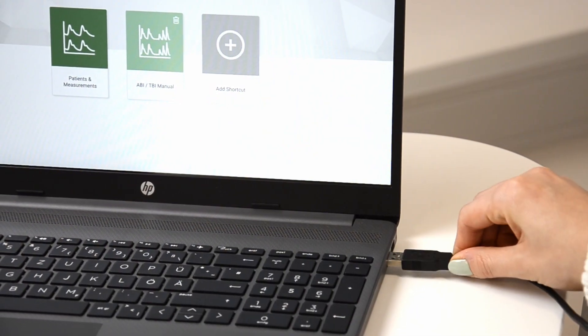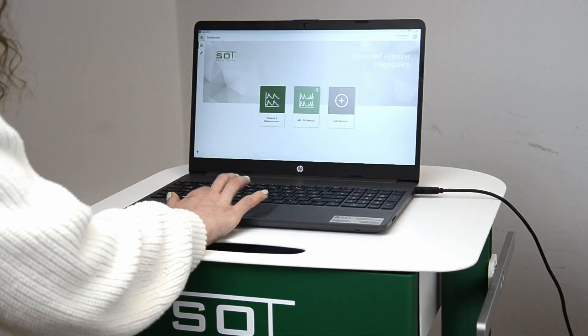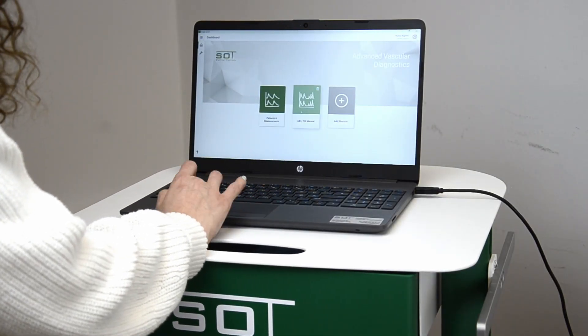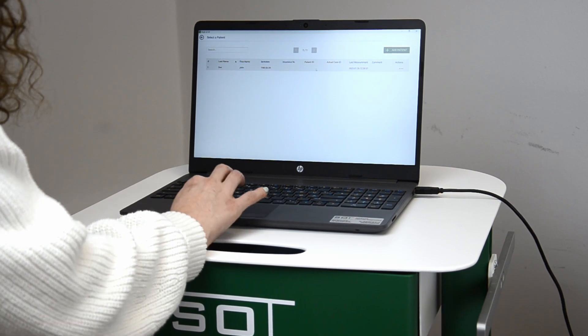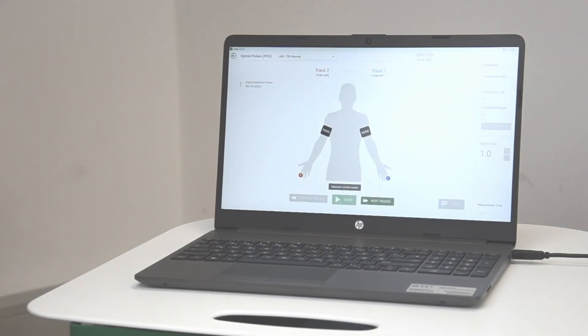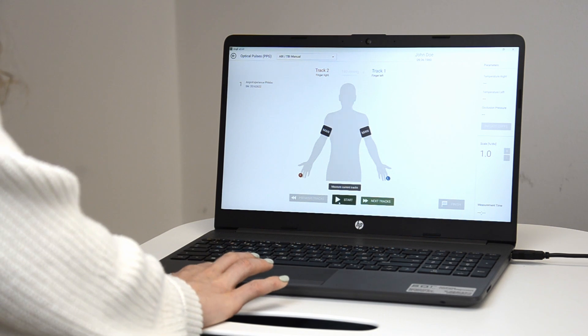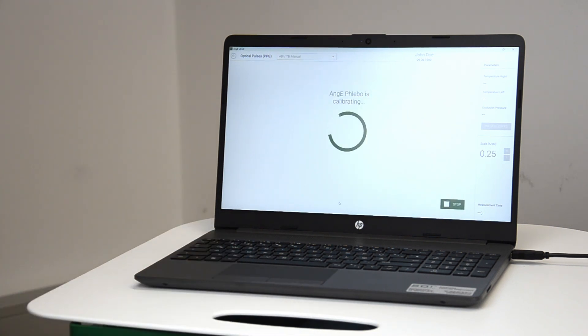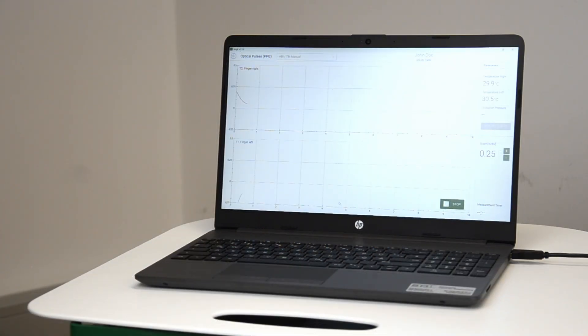Connect the USB cable to the computer. Select the patient or create a new patient in the software and select new measurement. Follow the on-screen guidance. Start the measurement and wait a few seconds for the optical sensors to calibrate. Make sure that you see good quality pulse waves on both sides of the body.